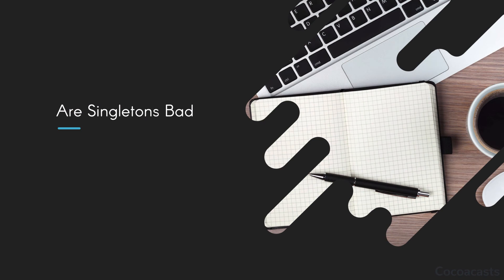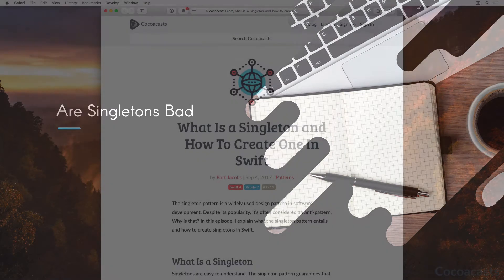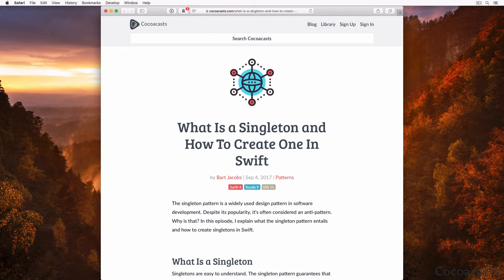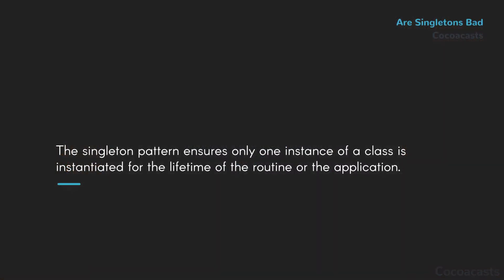When I first started dabbling with Cocoa development, I almost immediately came into contact with the singleton pattern. Many Cocoa frameworks including UIKit and Foundation use the singleton pattern. The singleton pattern is an easy to understand design pattern. In a nutshell, the singleton pattern ensures only one instance of a class is instantiated for the lifetime of the application. The Cocoa frameworks often refer to a shared object or a shared instance.